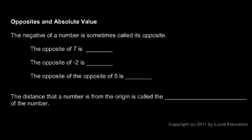Now we will talk about opposites and absolute value. The negative of a number is sometimes called its opposite. So the opposite of 7 is negative 7. The opposite of negative 2 is positive 2. We typically write that without the little positive sign, but the opposite of negative 2 is positive 2.